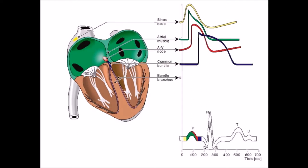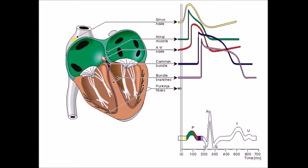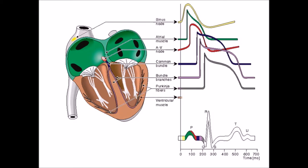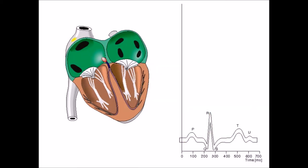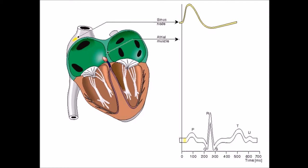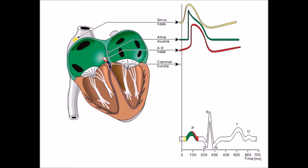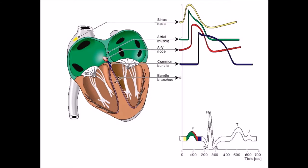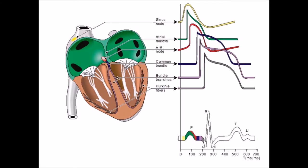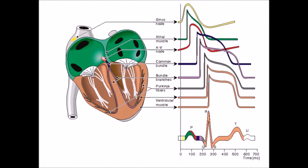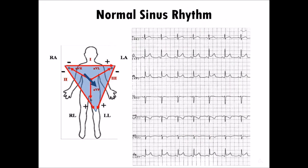The signal is then transmitted to the bundle of His, which then divides into two branches: the right and left bundle branch. There is one right bundle branch and two left bundle branches — the left anterior fascicle and the left posterior fascicle. The electrical signal reaches the ventricles via the Purkinje fibers. The signal then spreads through the heart muscle toward the outer part of the heart, and these electrical currents are recorded by an electrogram via electrodes.